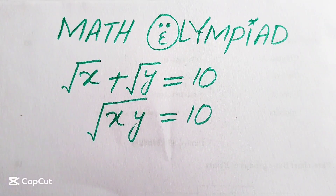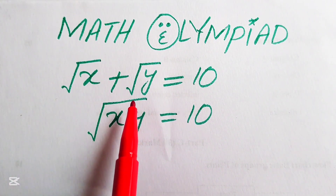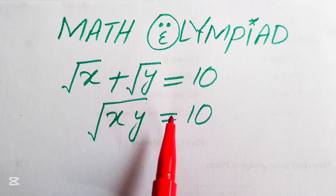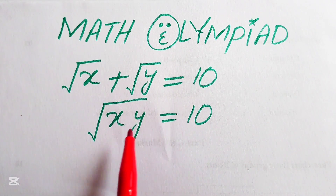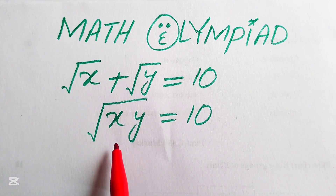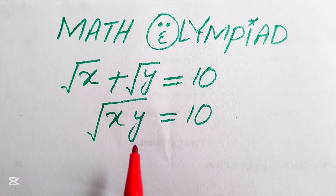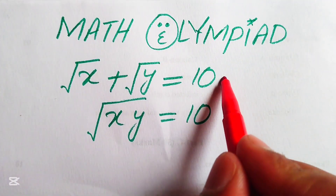Hello everyone, welcome to solve this nice math algebra problem. Here we have the square root of x plus the square root of y equals 10, and the square root of xy equals 10. We will solve this problem for the values of x and y.